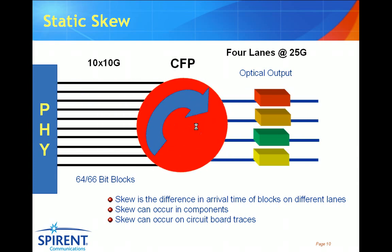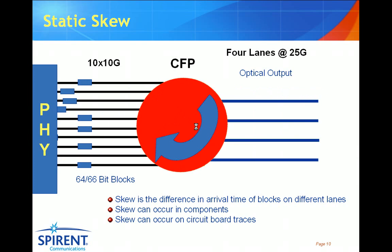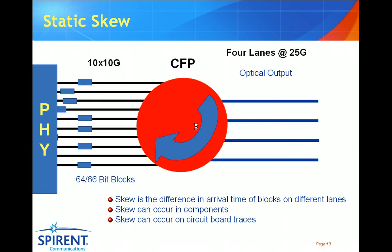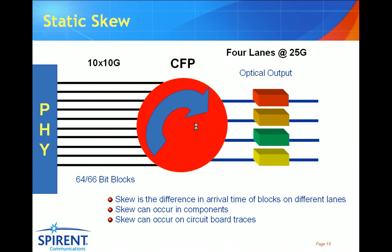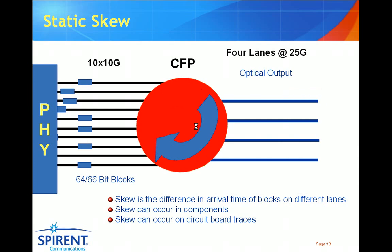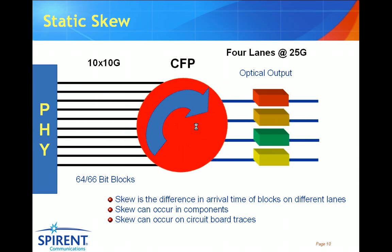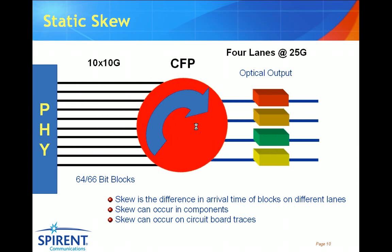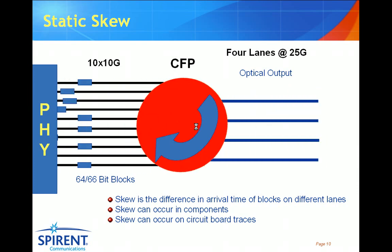So exactly what is skew? Skew is basically the difference in arrival time of the blocks on the different lanes. It can occur on the optical output, but here we're going to focus on the interface from the PHY to the CFP. Skew is the difference in arrival times of the blocks on different lanes, and it can occur due to the different characteristics of the components within the PHY — some components can have different latency characteristics which affect arrival time. Skew can also occur simply because some of the traces on the circuit board are either longer or shorter than other lanes, which can also affect the arrival time of blocks of data between the PHY and the CFP.